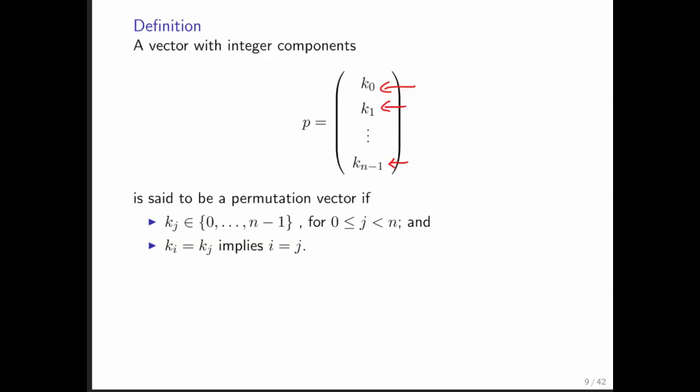So here, k0 through kn minus 1 are just a permutation, a reordering of the integers 0 through n minus 1. And notice that each integer can only occur once. That's what a permutation does.